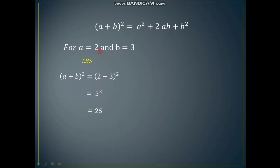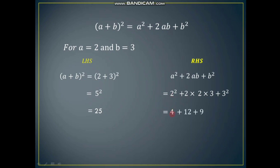Substituting on the right hand side: 2² plus 2 times 2 times 3 plus 3² gives 4 plus 12 plus 9 equals 25. So the right hand side is also 25, and left hand side equals right hand side. This equation is satisfied for these two values of the variables.